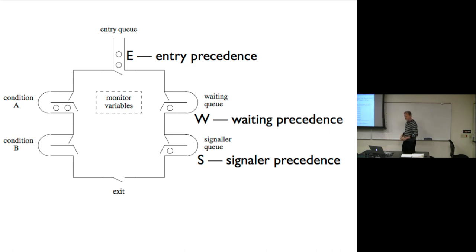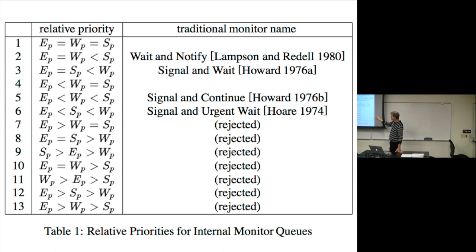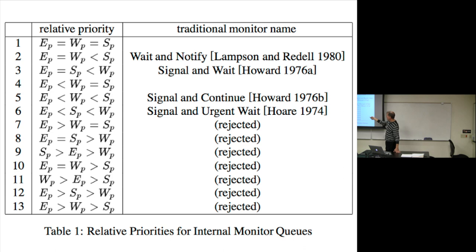In the paper by Boer, if you figure out all the possible combinations of equals and less-than, you come up with these — I believe this is all the reasonable ones. E sub P equals W sub P equals S sub P means they all have equal precedence. E sub P equals W sub P less than S sub P means the signaler has the highest precedence.